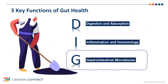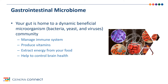The last section is G for gastrointestinal microbiome. Your gut is home to trillions of microorganisms that are dynamic — they change all the time based on what you eat, where you live, medications you take, the people you live with, and many day-to-day activities. The microorganisms consist of bacteria, yeast, and viruses that are beneficial. These organisms do everything from managing your immune system, producing vitamins, extracting energy from your food, to helping control brain health. Many common GI complaints, systemic disease, and poor glucose handling can be linked to the microorganisms that live within our gut.